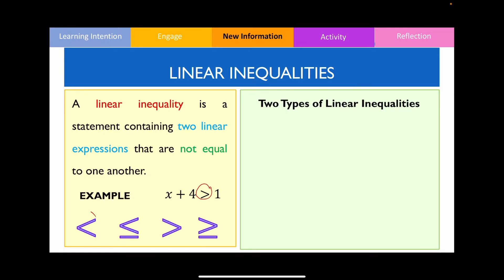This symbol over here means less than. This symbol over here means less than or equal to — that's why it has this part over here. The third symbol is greater than, and this one is greater than or equal to.